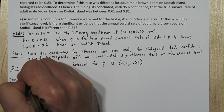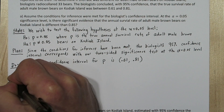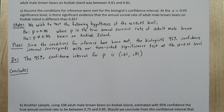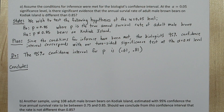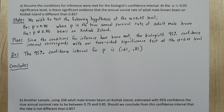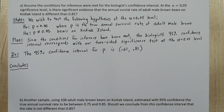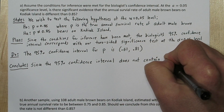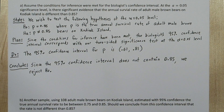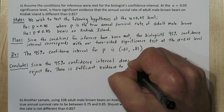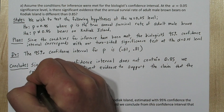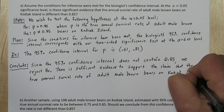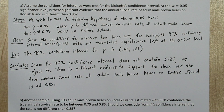So let's conclude. Since the 95% confidence interval does not contain 0.85, we reject the null hypothesis. There is sufficient evidence to support the claim that the true annual survival rate of adult male brown bears on Kodiak Island is not 0.85.